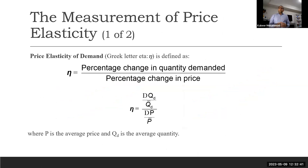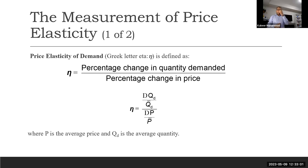When we want to calculate something, we need a formula. The easiest way to calculate the price elasticity of demand — which you can find in the definition as well — is: percentage change in quantity demanded divided by percentage change in price. That is the formula for price elasticity of demand.